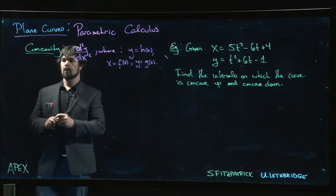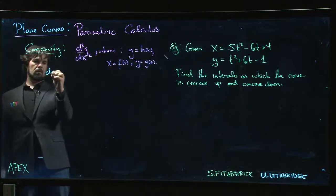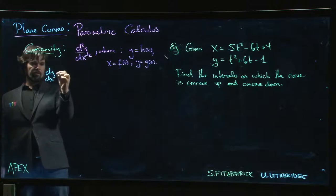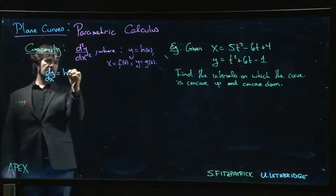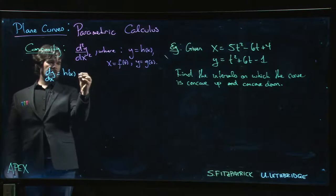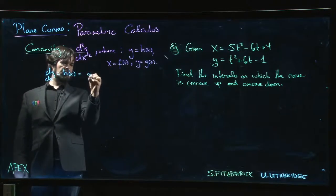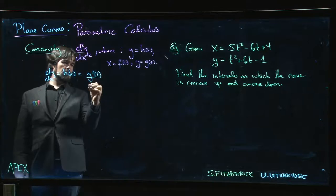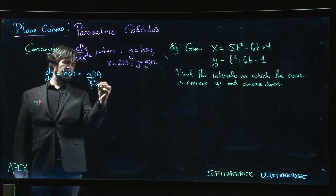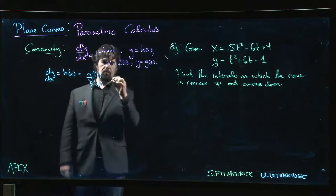So dy/dx, or if you like h prime of x, we know what that is—that's dy/dt over dx/dt. So it's g prime of t over f prime of t.